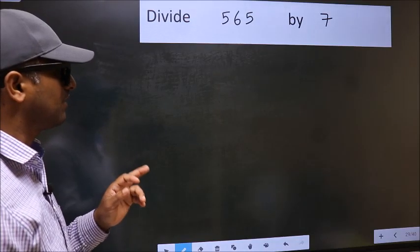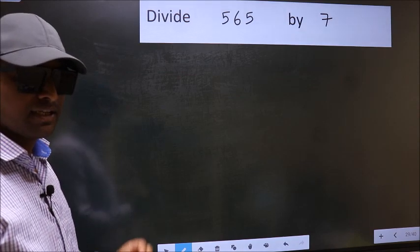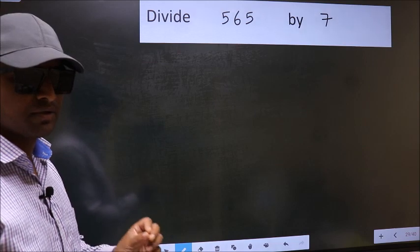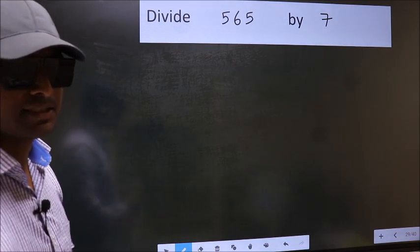Divide 565 by 7. While doing this division, many do this mistake. What is the mistake that they do? I will let you know. But before that, we should frame it in this way.